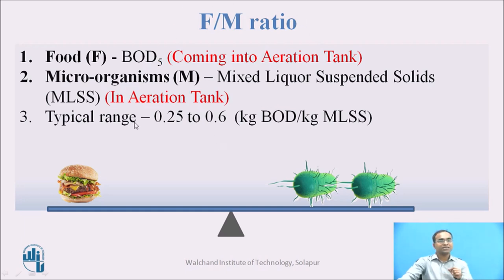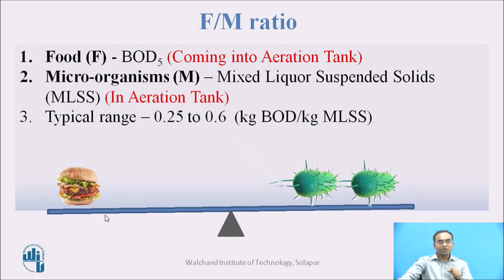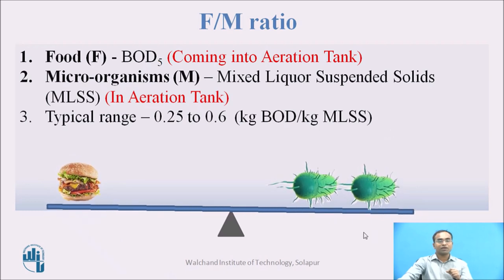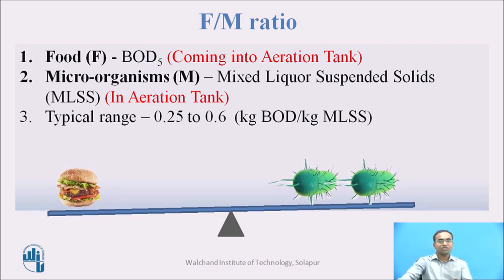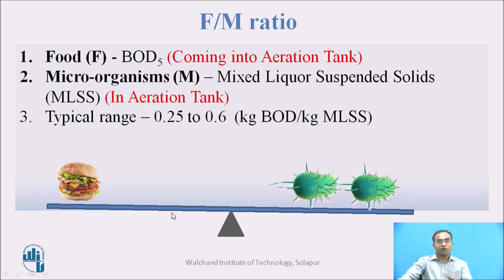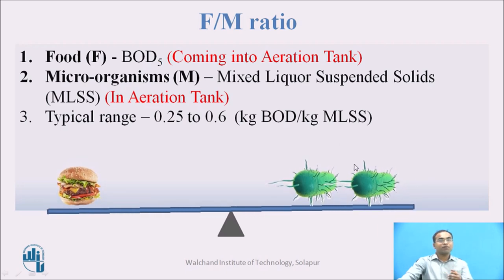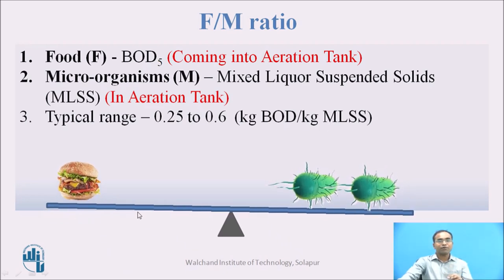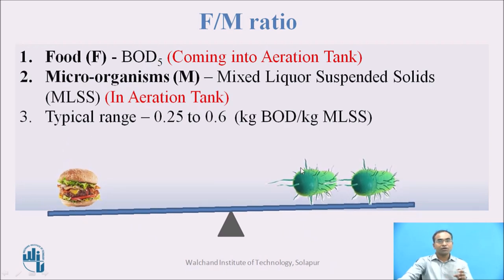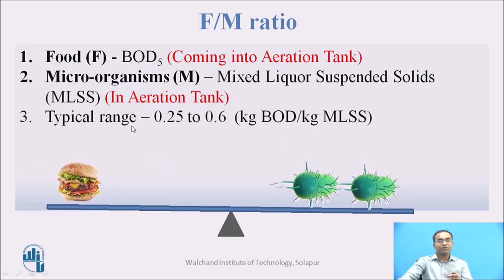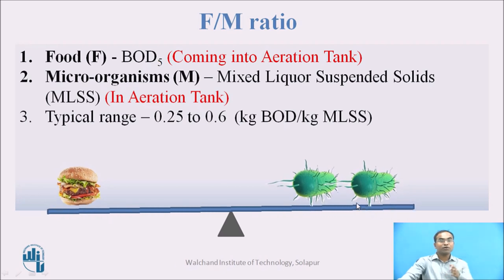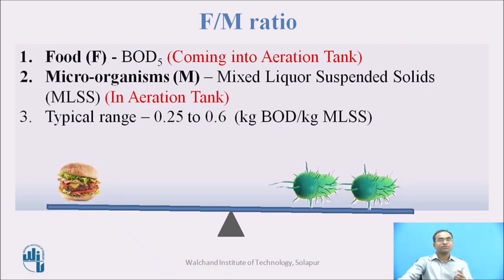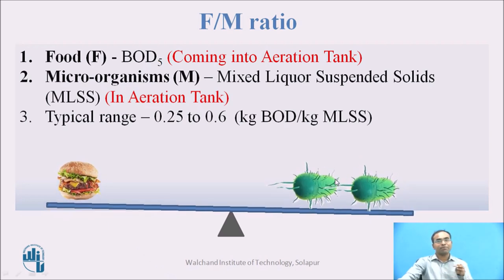Typically the F by M ratio is kept at 0.25 to 0.6. Food represents carbonaceous matter and microorganisms are present in the aeration tank. For proper degradation of carbonaceous matter by microorganisms, we must provide proper food and proper microorganisms — if either one fails, the whole activated sludge process gives poor efficiency. There must be one producer and one decomposer for the food chain to properly function, and the same logic is applied in the activated sludge process.